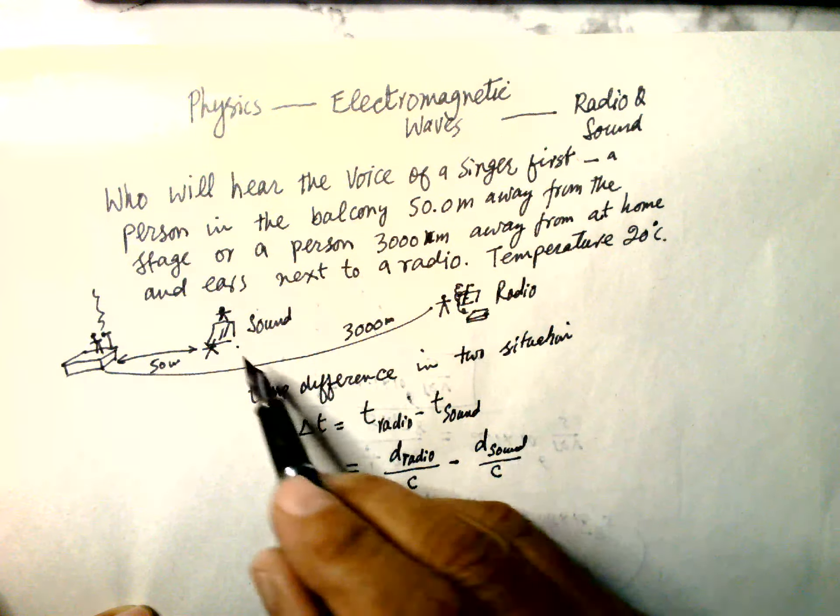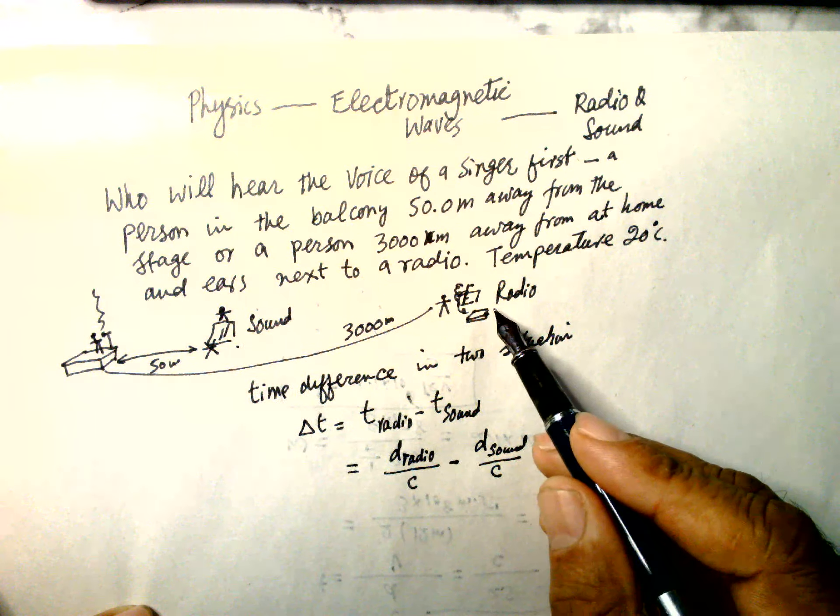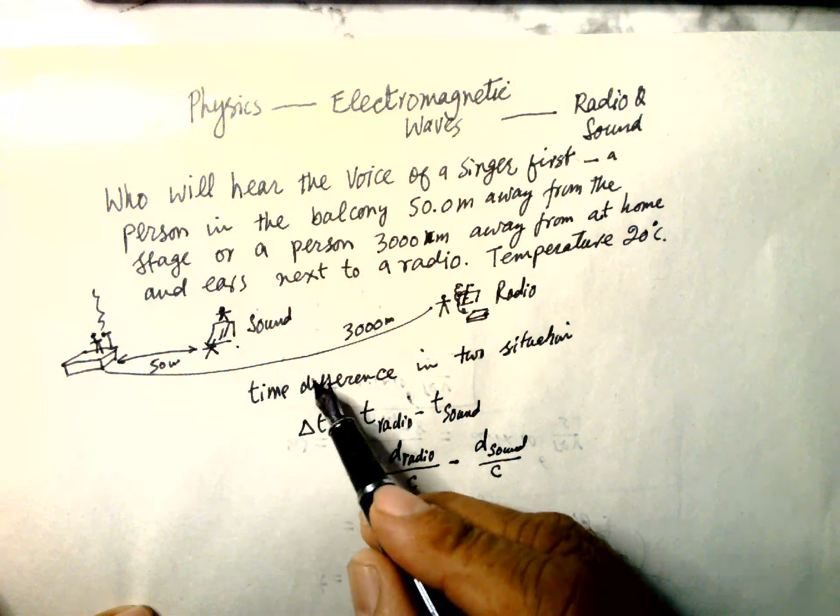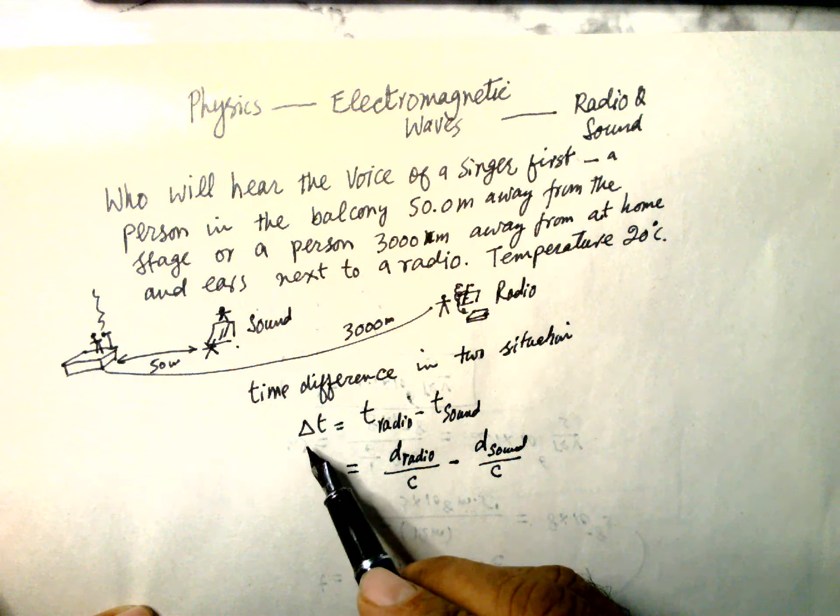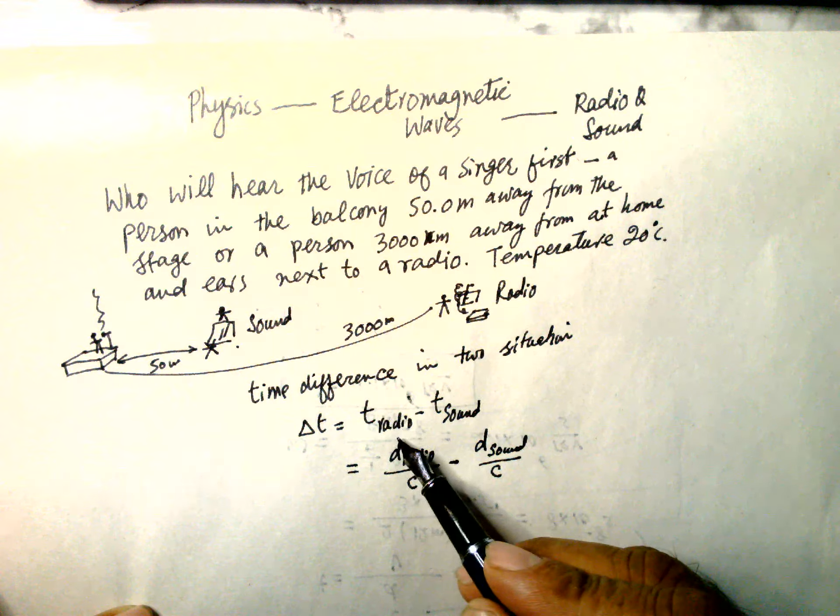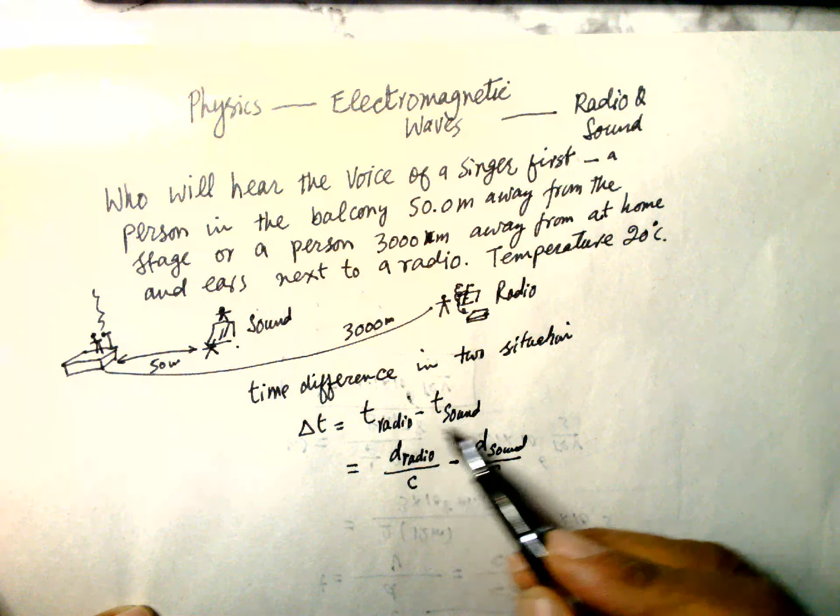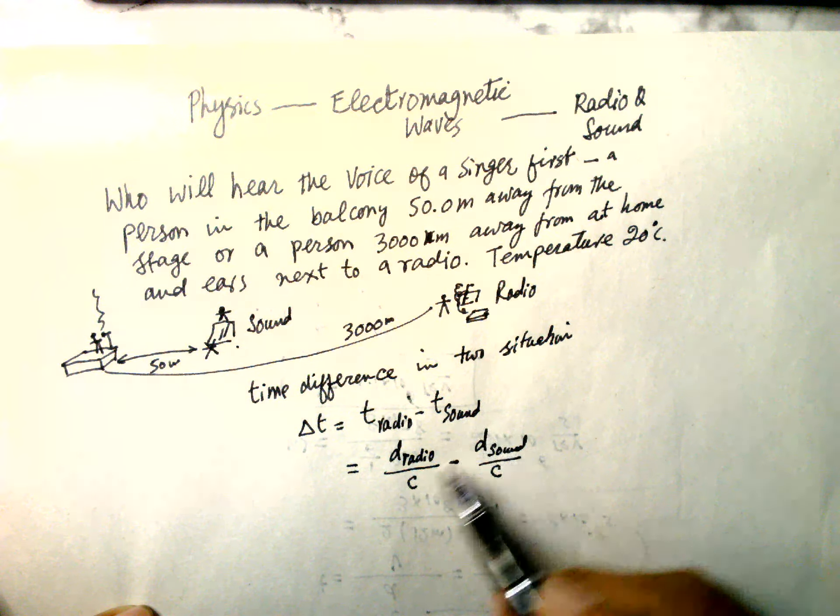State sound and radio. The solution of this one is the time difference in both situations. Delta t is the time taken by the radio and time taken by the sound.